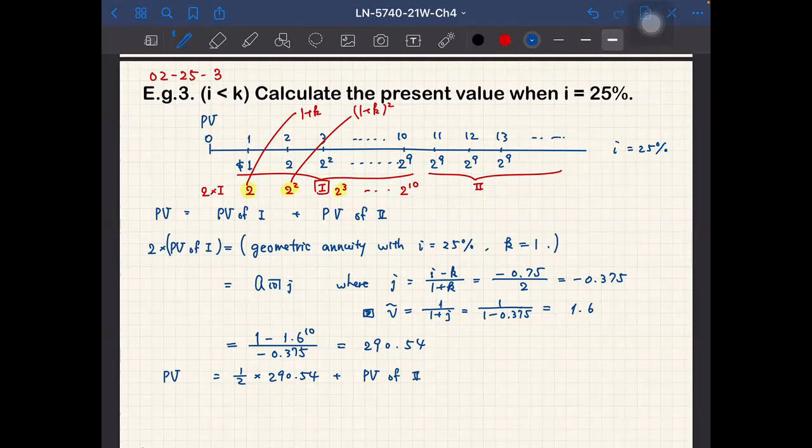So number 2, the present value of the cash flow number 2 is actually the 10 year discount of present value of this X. So X is the perpetuity immediate.